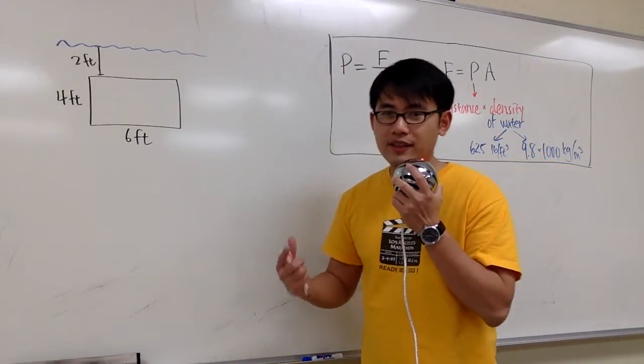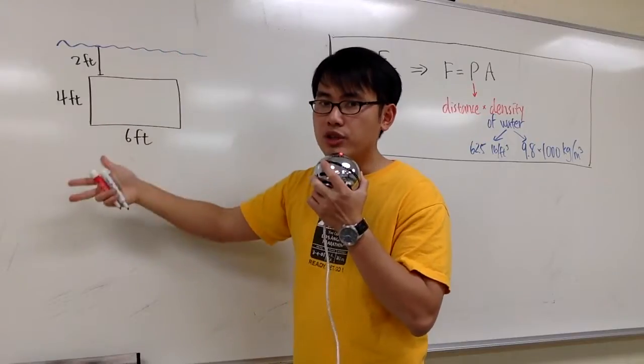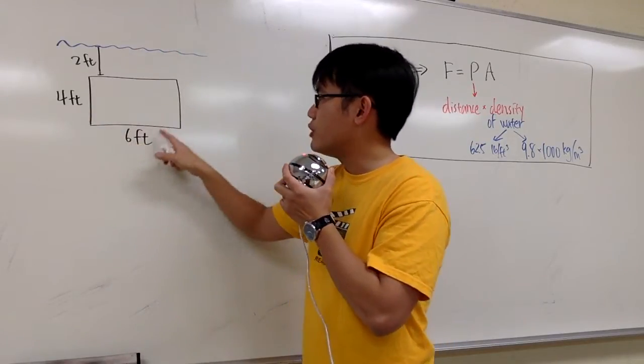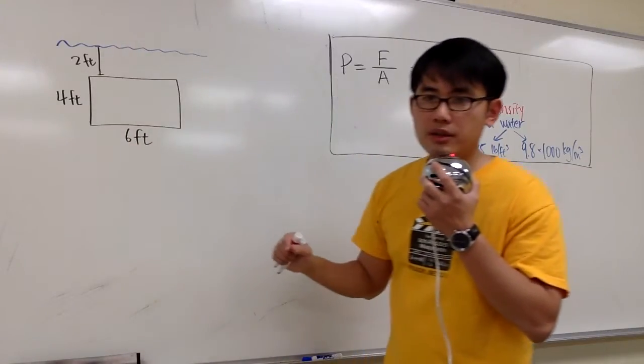We are going to calculate the hydrostatic force that's acting on this rectangular plate when it is submerged vertically into the water. So just like this right here. Here we have the dimension, 4 feet by 6 feet, and then 2 feet below the water.